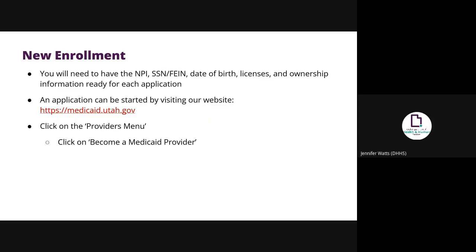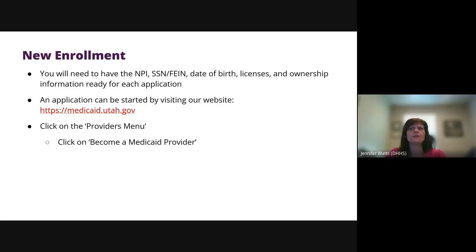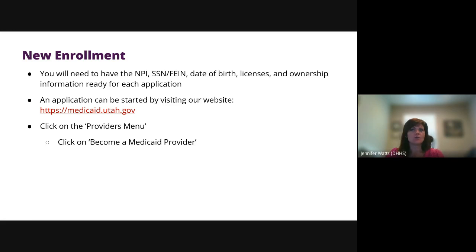When starting a new enrollment, you will need the MPI, SSN, or FEIN, date of birth, licenses, and ownership information in order to start the enrollment in PRISM.